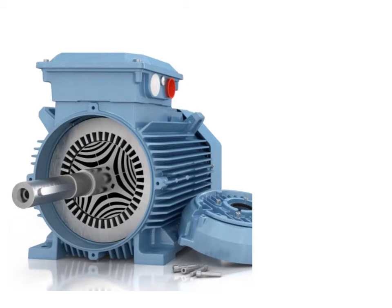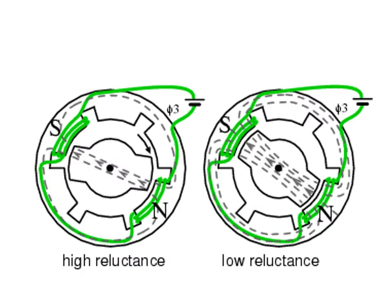This is a pictorial view of the reluctance motor — the yoke, power supply, stator, rotor, and shaft are all visible in the complete setup. The operation is straightforward: when we provide a three-phase supply, the armature produces a rotating magnetic flux. As the flux changes, the rotor moves from high reluctance to low reluctance paths continuously, causing the rotor to rotate continuously. We get mechanical output from the rotor itself — this is how it works, moving from high reluctance to low reluctance.